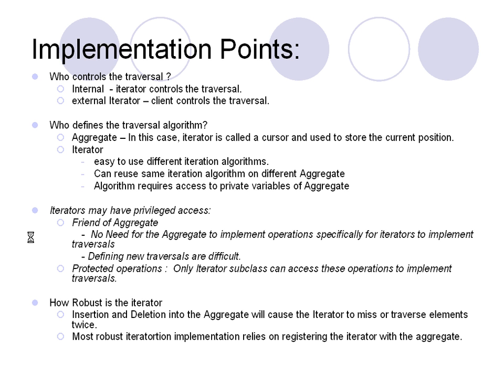Who defines the traversal algorithm? It could be the aggregate class itself or the iterator. If the aggregate defines the algorithm, the iterator is a dummy iterator — the aggregate handles all traversal while the iterator just stores the current position. But if the iterator implements all the traversal algorithm, it's easy to use different iteration algorithms. Tomorrow if you want to implement a different algorithm, only the iterator class changes, and the aggregate like list remains the same. You can also reuse the same iteration algorithm on different aggregates.